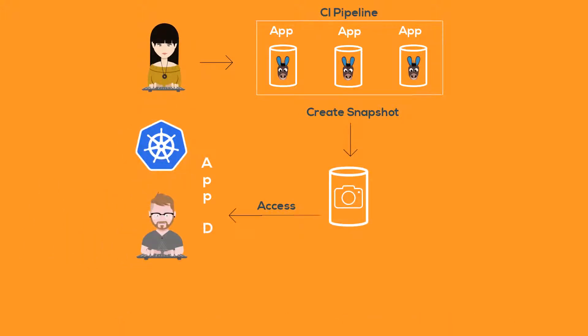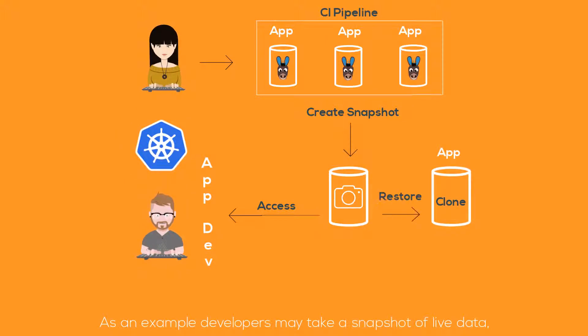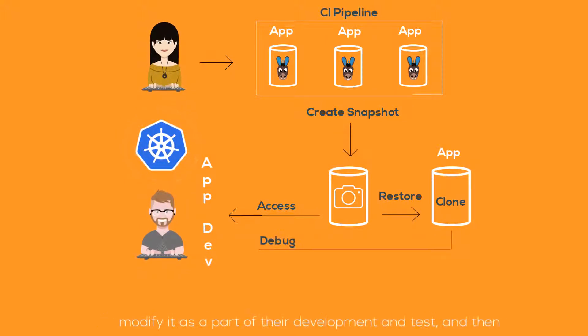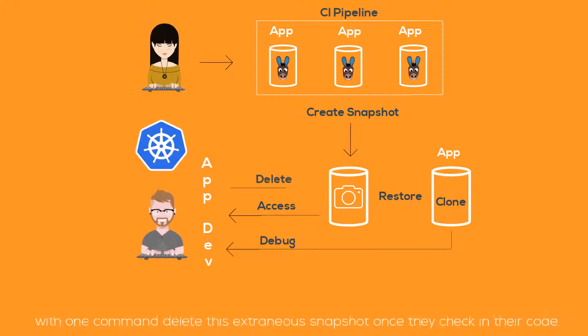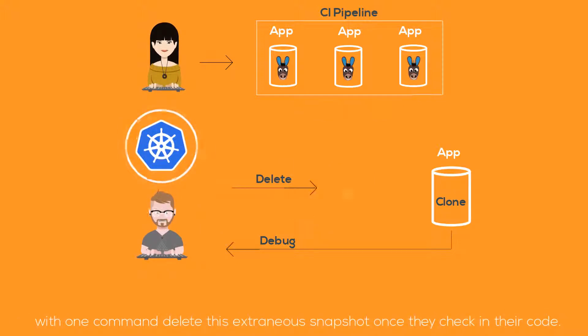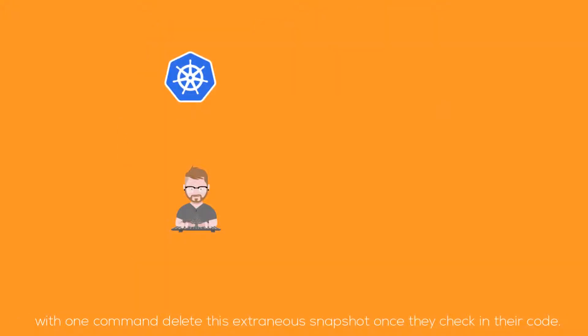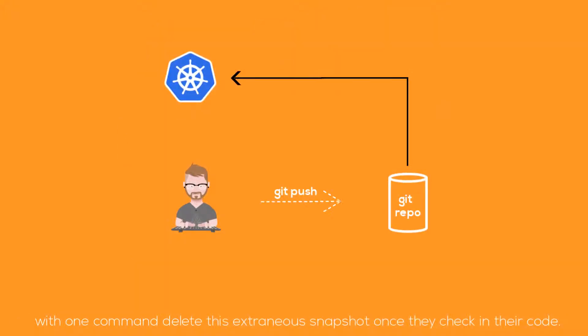As an example, developers may take a snapshot of live data, modify it as part of their development and test, and then with one command, delete this extraneous snapshot once they check in their code.